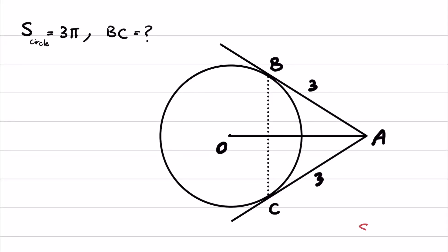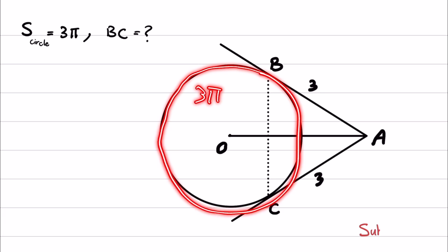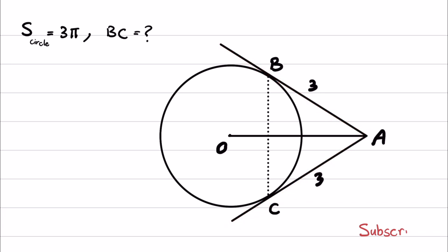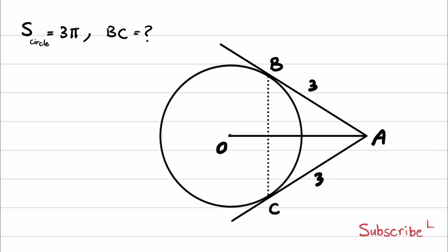Welcome to a new geometry journey with Mathartic. In this question, a circle with area 3 times pi is given, and from point A outside of the circle, two tangents are drawn. The intersection points of the tangents and the circle are B and C. The length of AB is 3, and the length of AC is 3 as well. The question asks to find the length of chord BC.